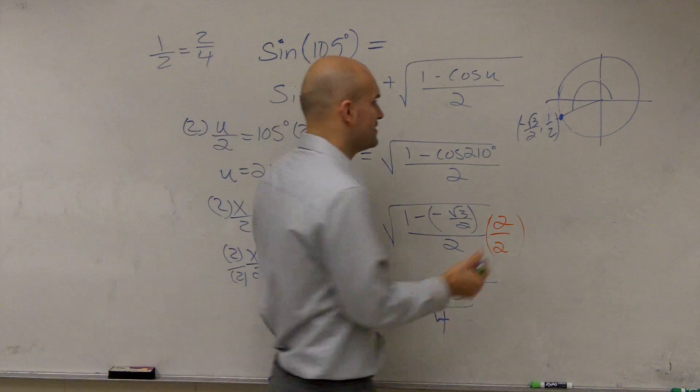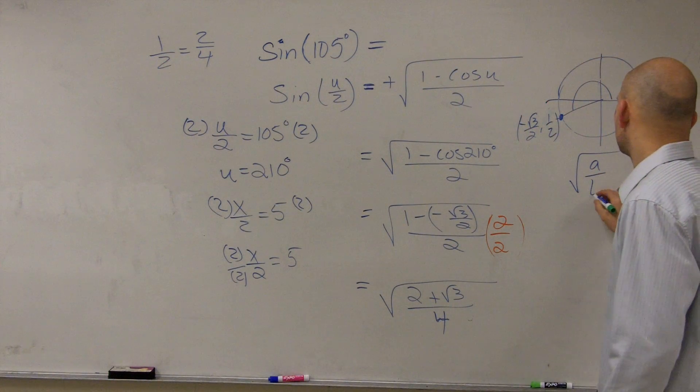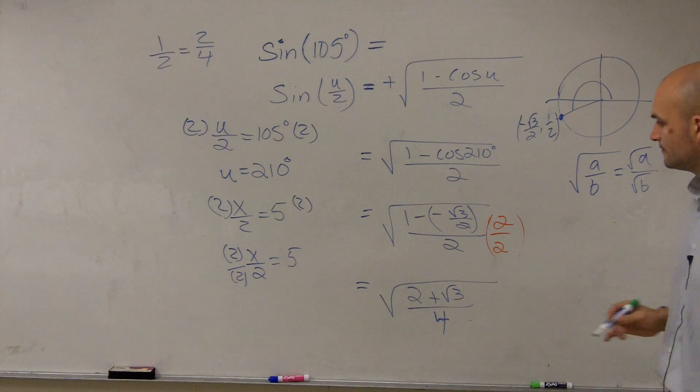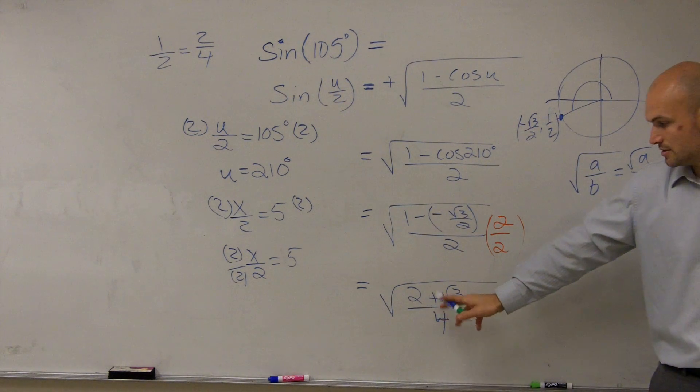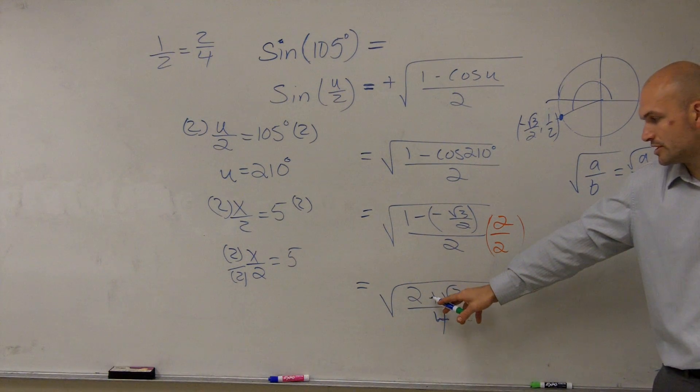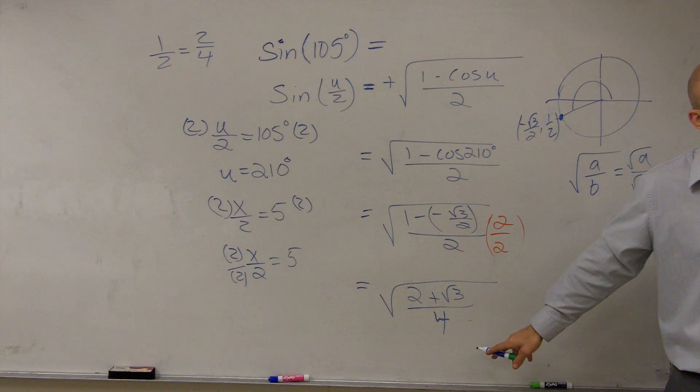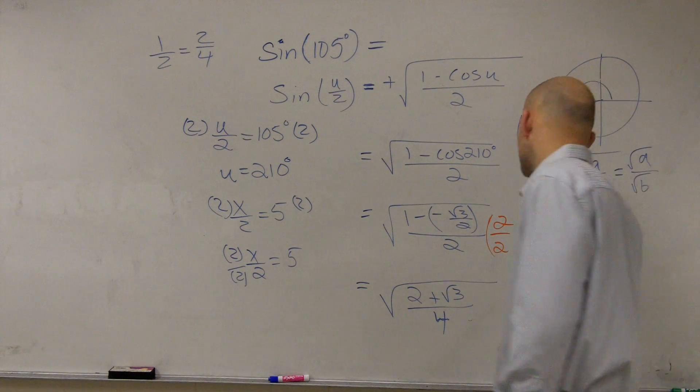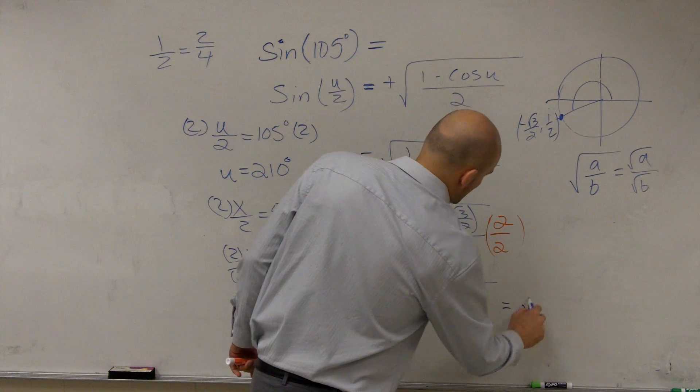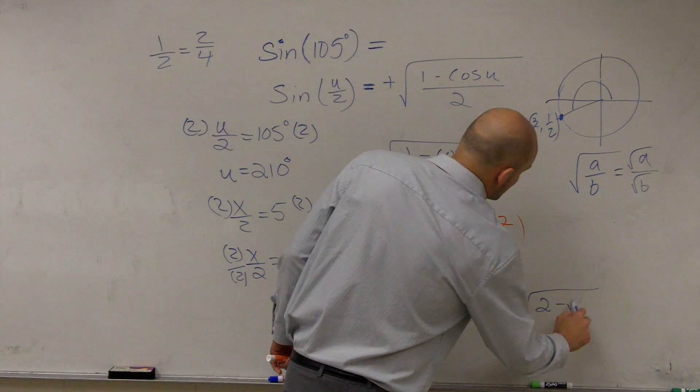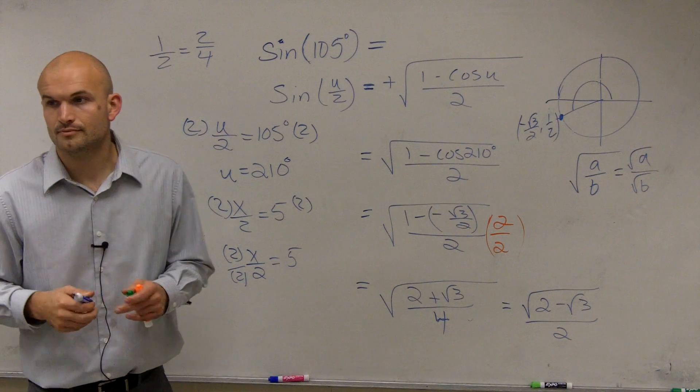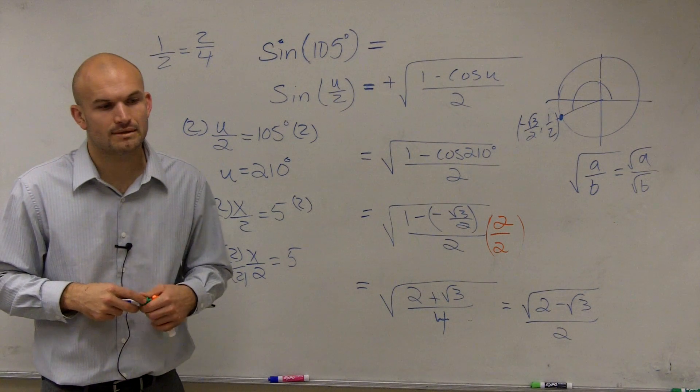Now the last thing that you want to remember is the square root of a divided by the square root of b is equivalent to the square root of a over the square root of b. So you guys look at this answer. I can't simplify more the square root of 2 plus the square root of 3, but can I simplify the square root of 4? Yeah. So 2 minus the square root of 3 over 2, and there you go. That's our answer.